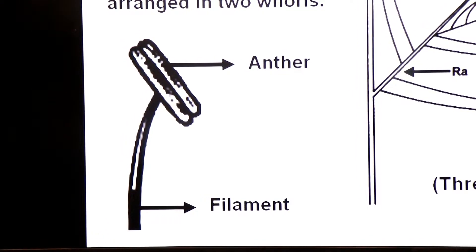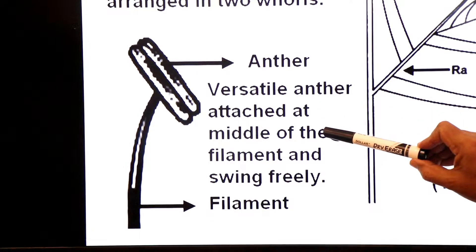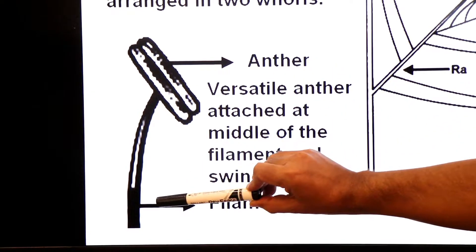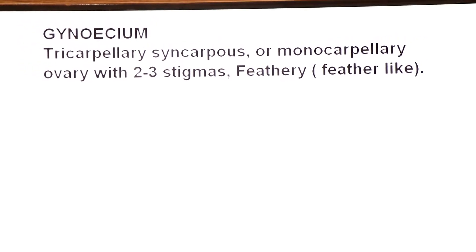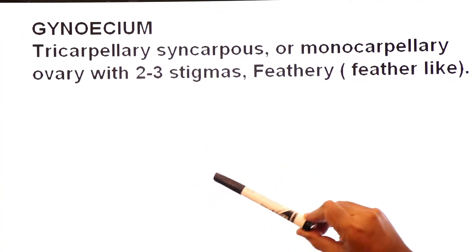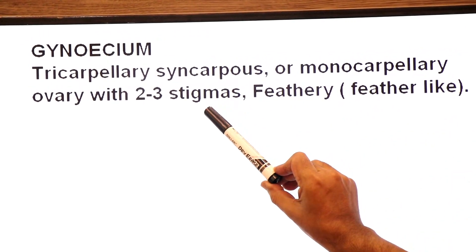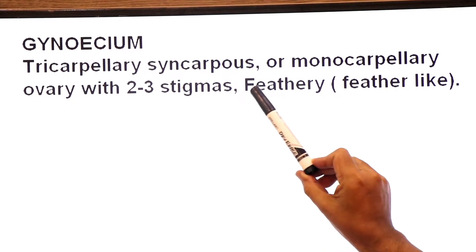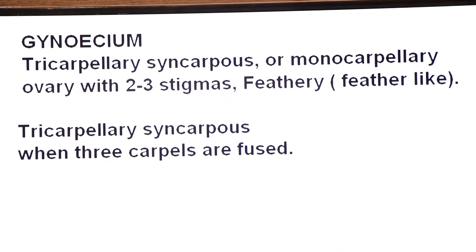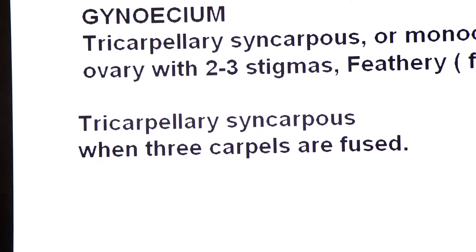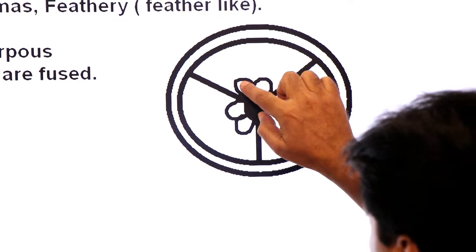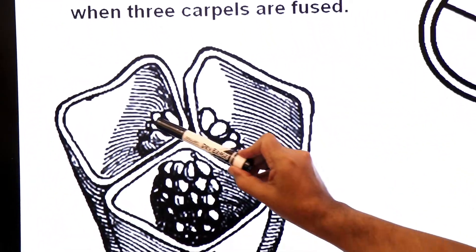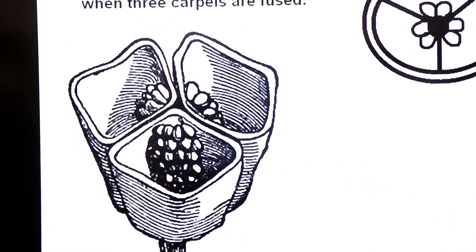Here you see the anther and the filament. A versatile anther is one attached at the middle of the filament and able to swing freely. Now we come to the gynoecium of the grass family: tricarpellary — 3 carpels — syncarpous, meaning fused. If there is one carpel it would be monocarpellary. When 3 carpels are fused with each other it is tricarpellary syncarpous.